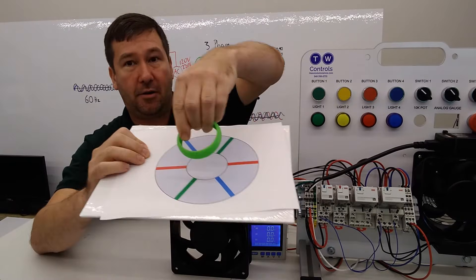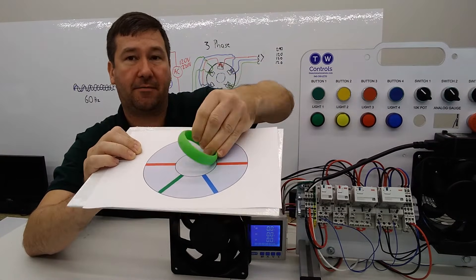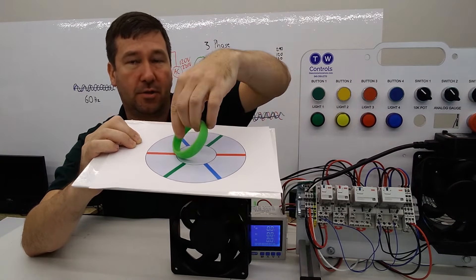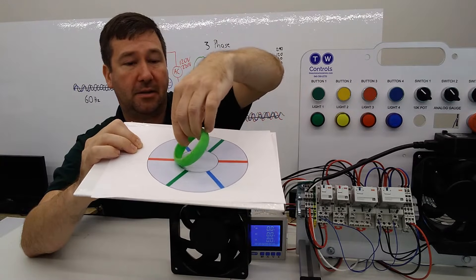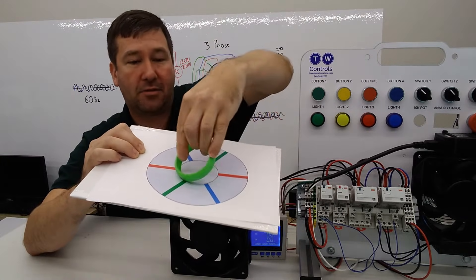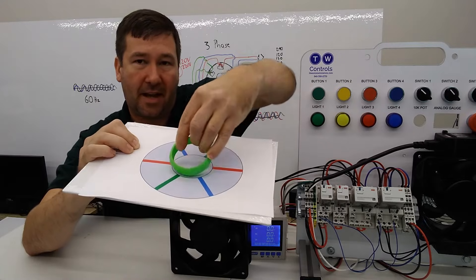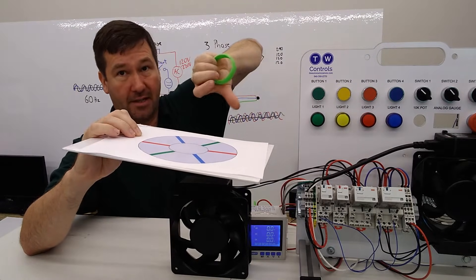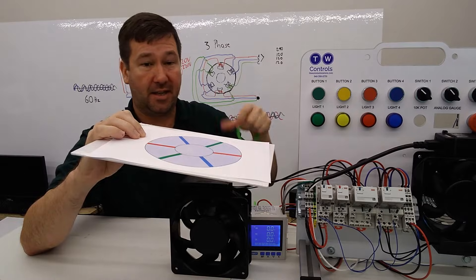If you recall in that video, we showed that the magnetic field is doing this, towards the paper being south, away being north, and it's rotating this north-south magnetic field, which pulls that squirrel cage along, and that's how it rotates.